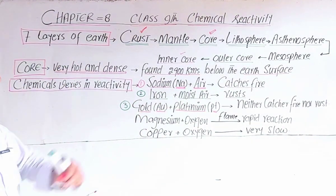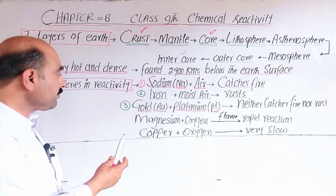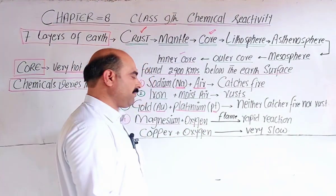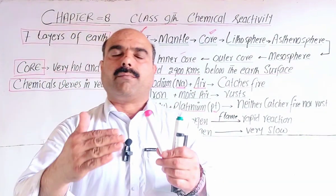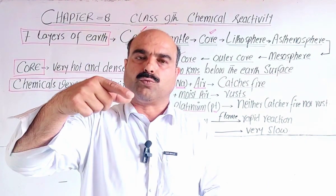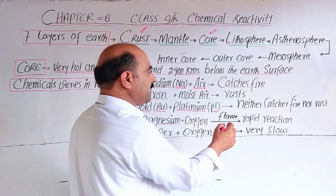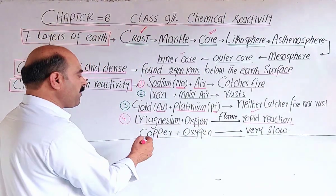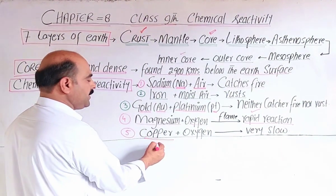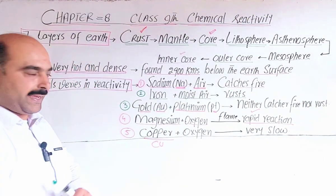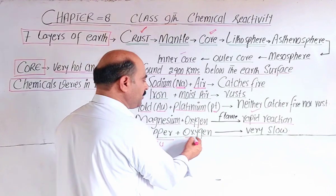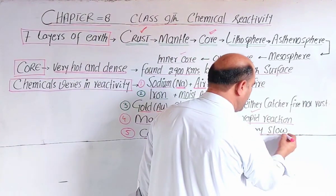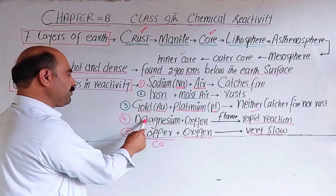So there is a difference in reactivity among metals: sodium, iron, gold, and platinum have different reactivities. Another example: magnesium combines with oxygen in open air — when placed in a flame it burns rapidly and quickly. In comparison, copper (symbol Cu, later name cuprum) — when heated in open air, copper slowly reacts with oxygen. So magnesium is more reactive than copper.